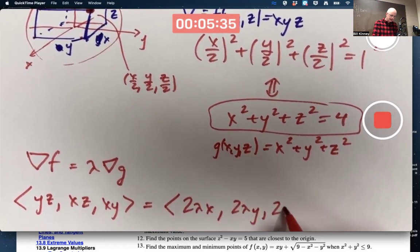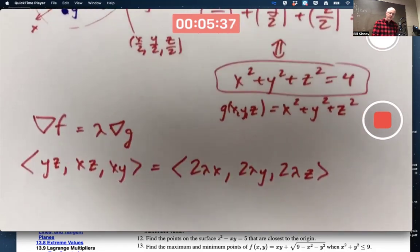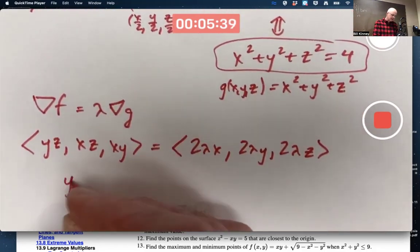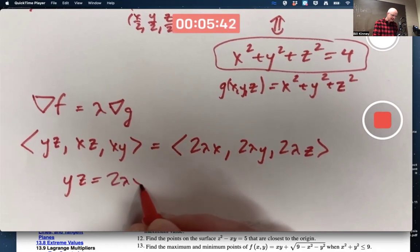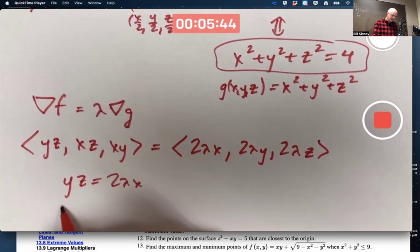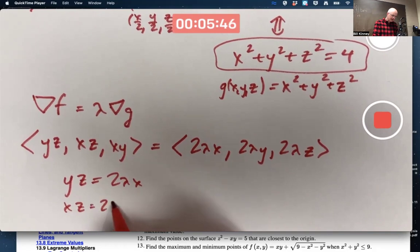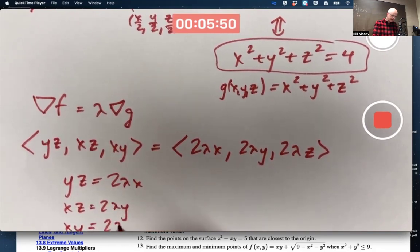So the resulting scalar equations are YZ equals 2 lambda X, XZ equals 2 lambda Y, XY equals 2 lambda Z.